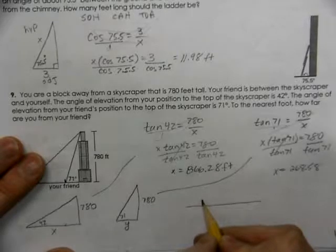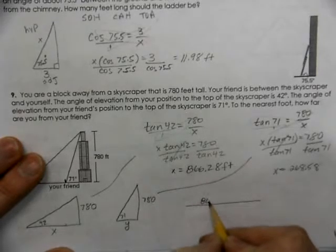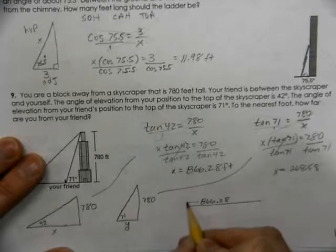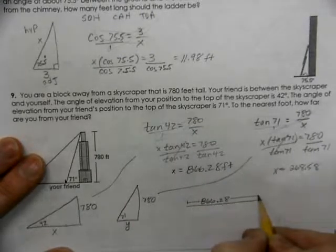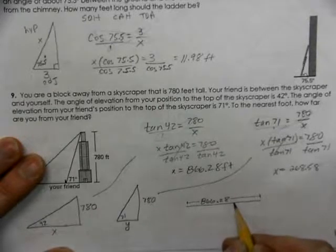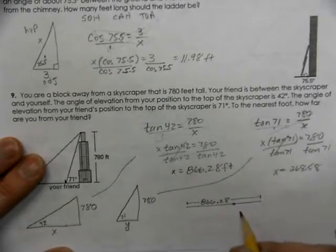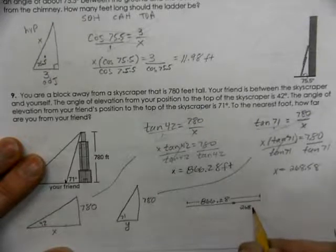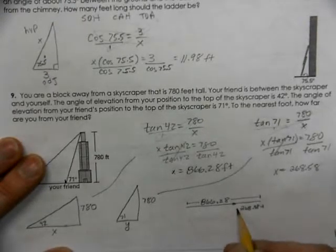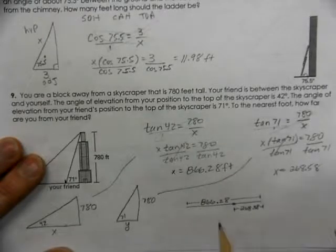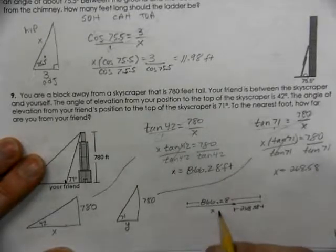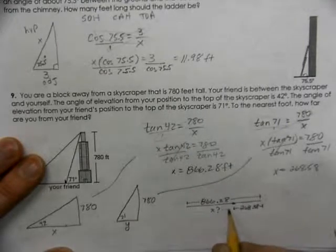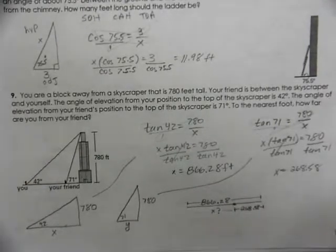So, if we're 866.28, and this is where your friend's standing, 268.58, what is x? What is the distance here? What's the distance between you and your friend?